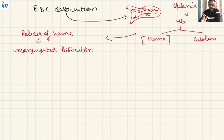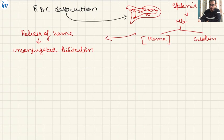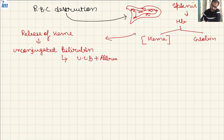This unconjugated bilirubin is a lipid-soluble molecule, meaning it cannot dissolve in water. When it is formed after the conversion of heme into unconjugated bilirubin, it has to go to the blood. To travel in the blood, it binds to a molecule known as albumin. So, this unconjugated bilirubin circulates only when it combines with albumin.